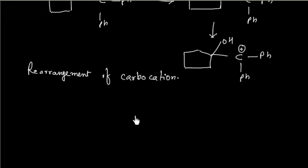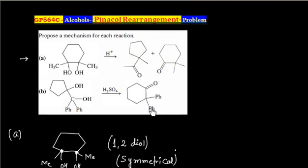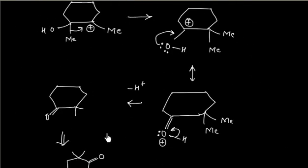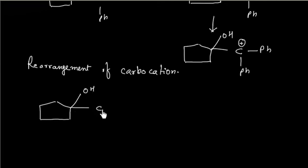The next step is rearrangement of the carbocation. This time, the rearrangement has to be ring expansion because the final product contains a 6-membered ring — so we are forced to make a 6-membered ring. We have a 5-membered ring; this carbon contains the OH group and the adjacent carbon contains 2 phenyl groups and a positive charge.